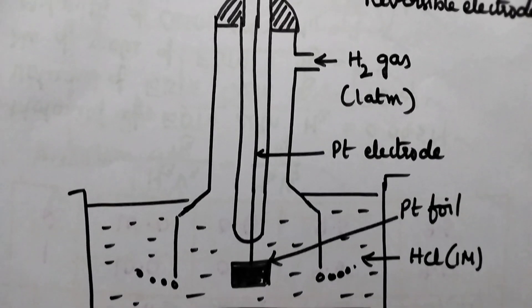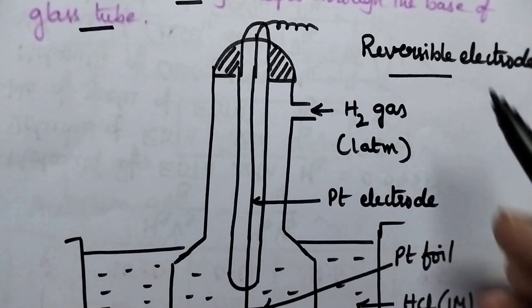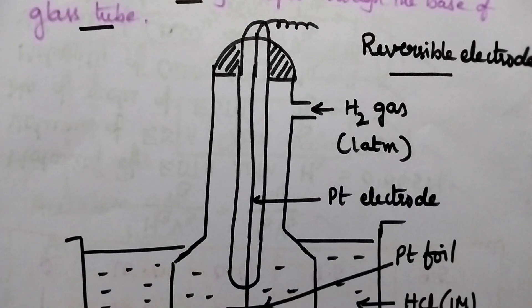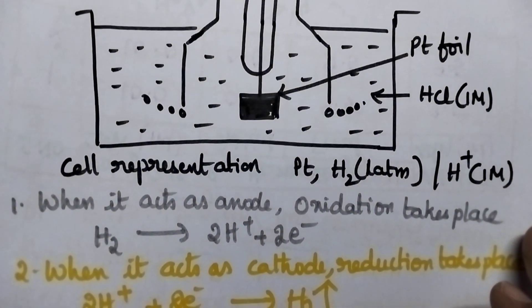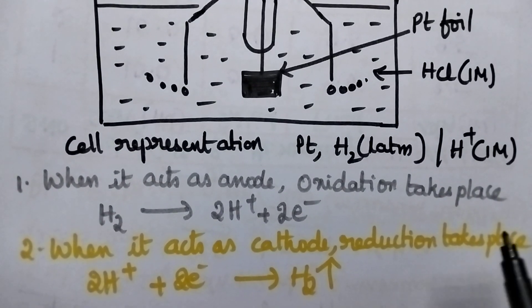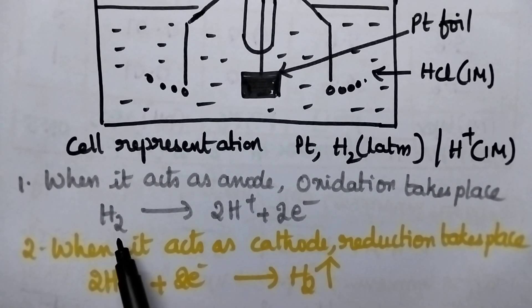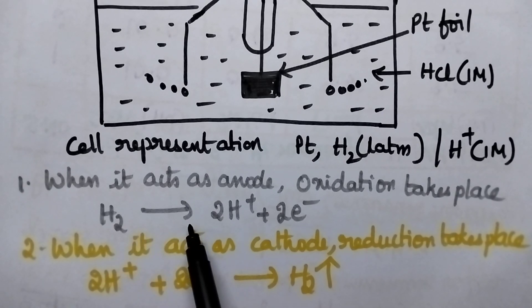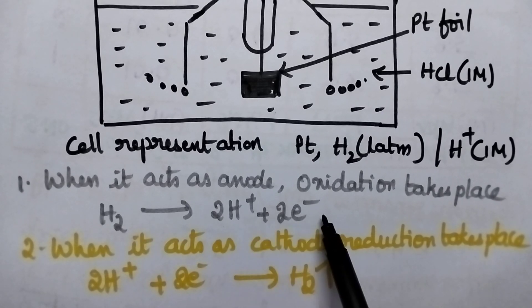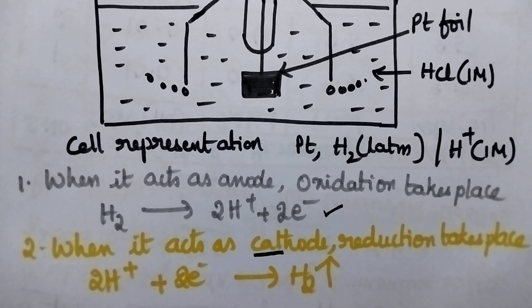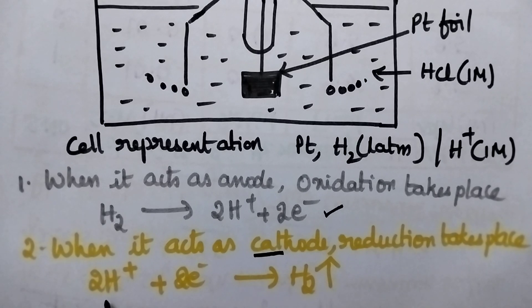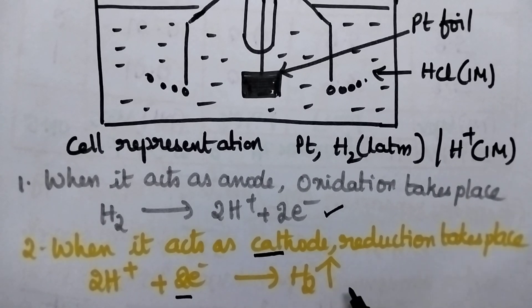This hydrogen electrode is reversible, meaning it can act as an anode or as a cathode. When this electrode acts as anode, oxidation takes place and the hydrogen gas is oxidized to hydrogen ions with the loss of 2 electrons. When this electrode acts as cathode, reduction takes place. The H+ ions from the HCl solution gain electrons and result in the formation of hydrogen gas.